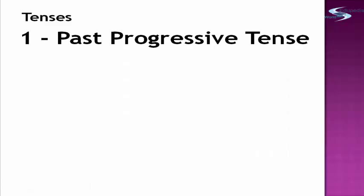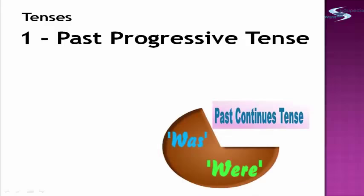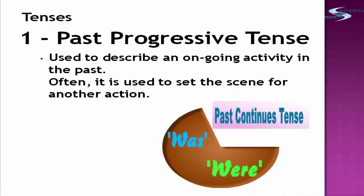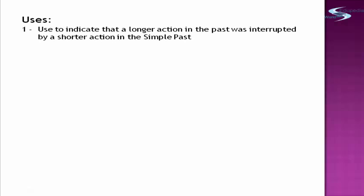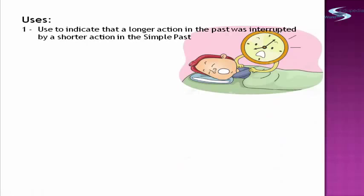The first one is the past progressive tense. What is a past progressive tense? A past progressive tense is used to describe an ongoing activity in the past. Often, it is used to set the scene for another action. Number one usage: it is used to indicate that a longer action in the past was interrupted by a shorter action in the simple past. Example: 'I was having a beautiful dream when the alarm clock rang.'